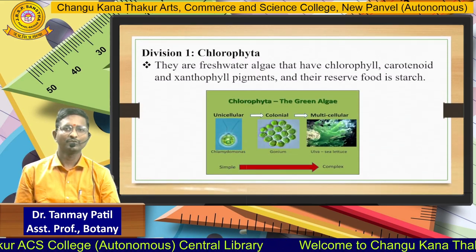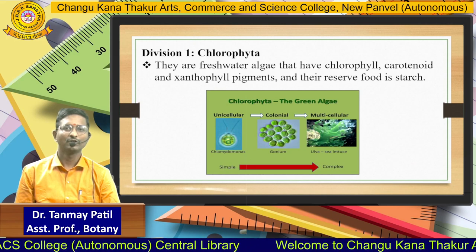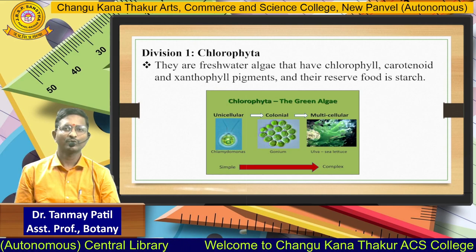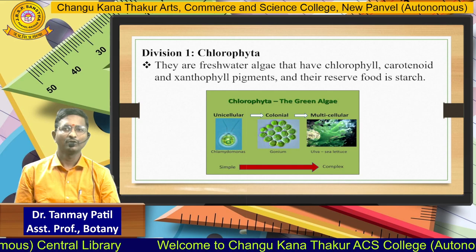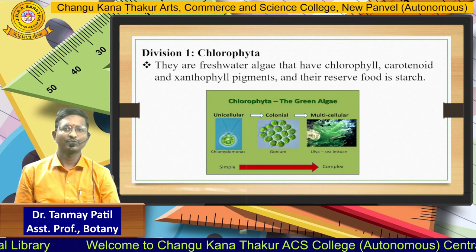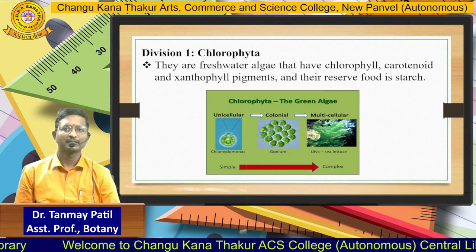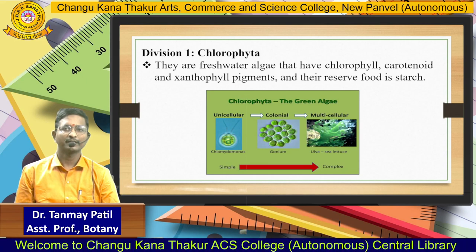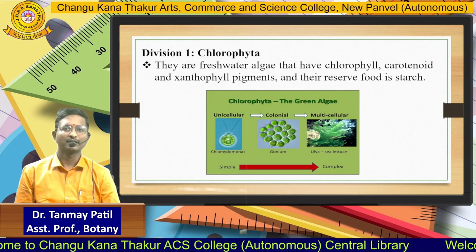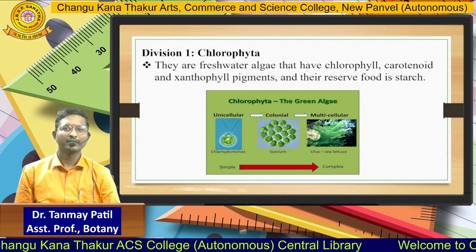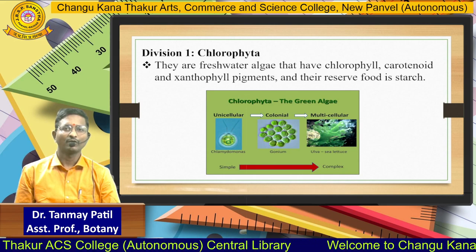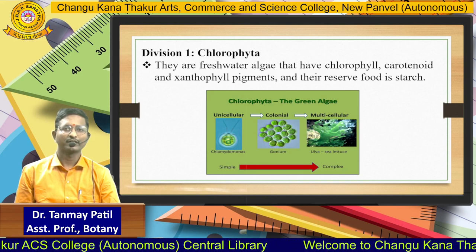The first division is Chlorophyta. They are freshwater algae that have chlorophyll, carotenoids and xanthophyll pigments, and their reserve food material is starch. Here is the image showing the different algae of the Chlorophyta division.